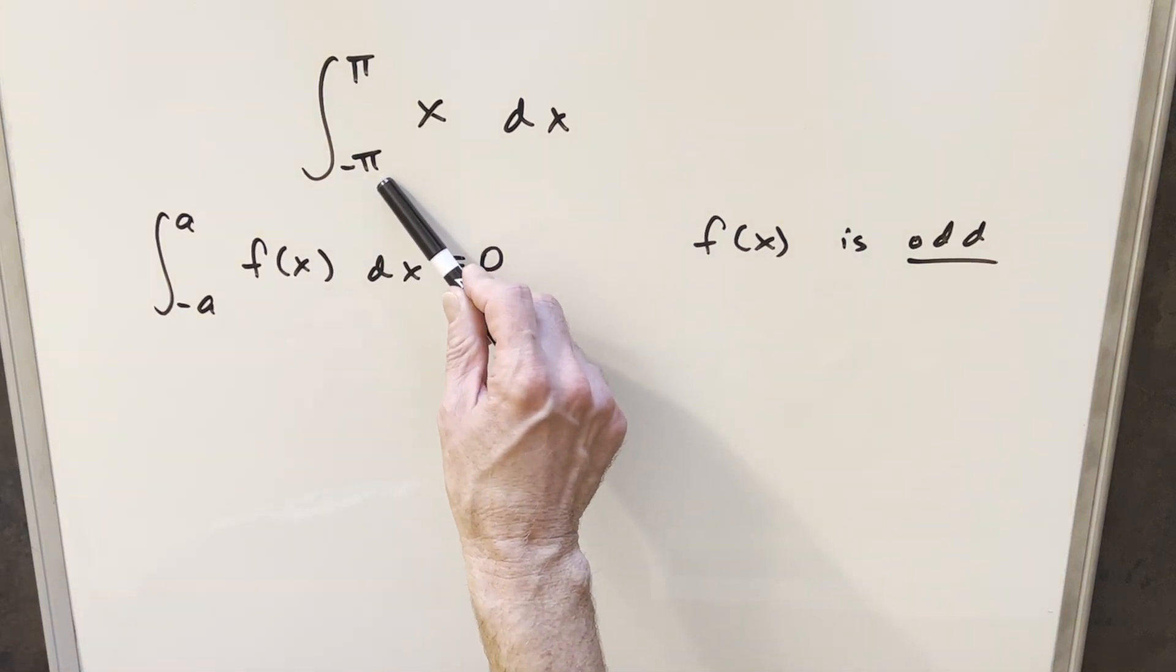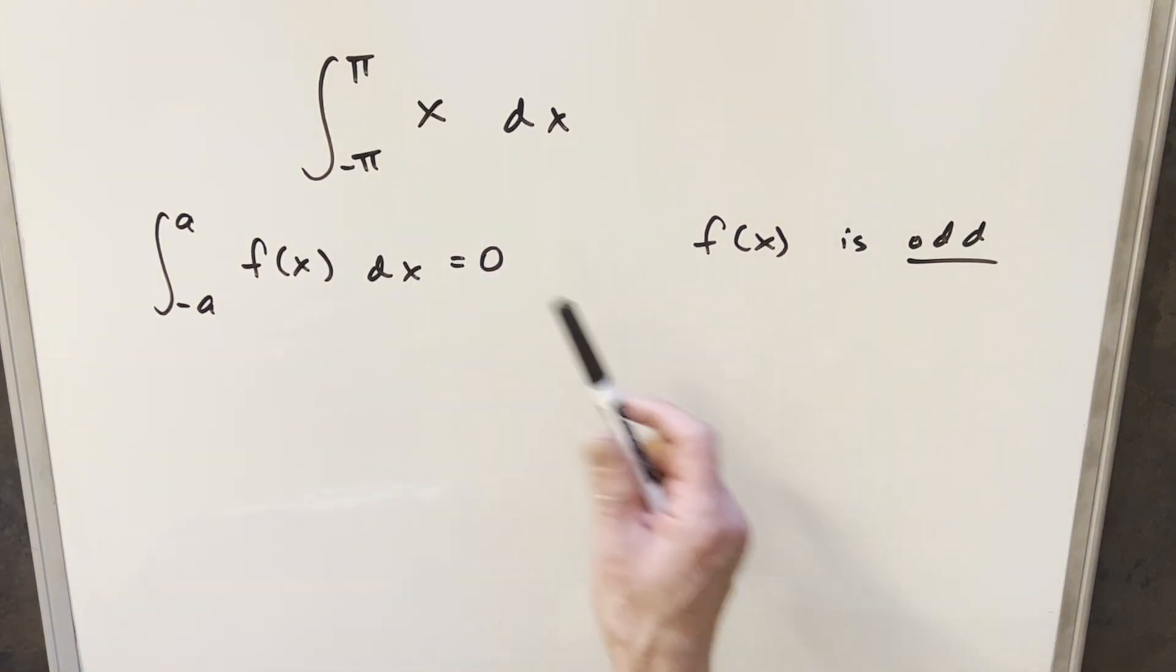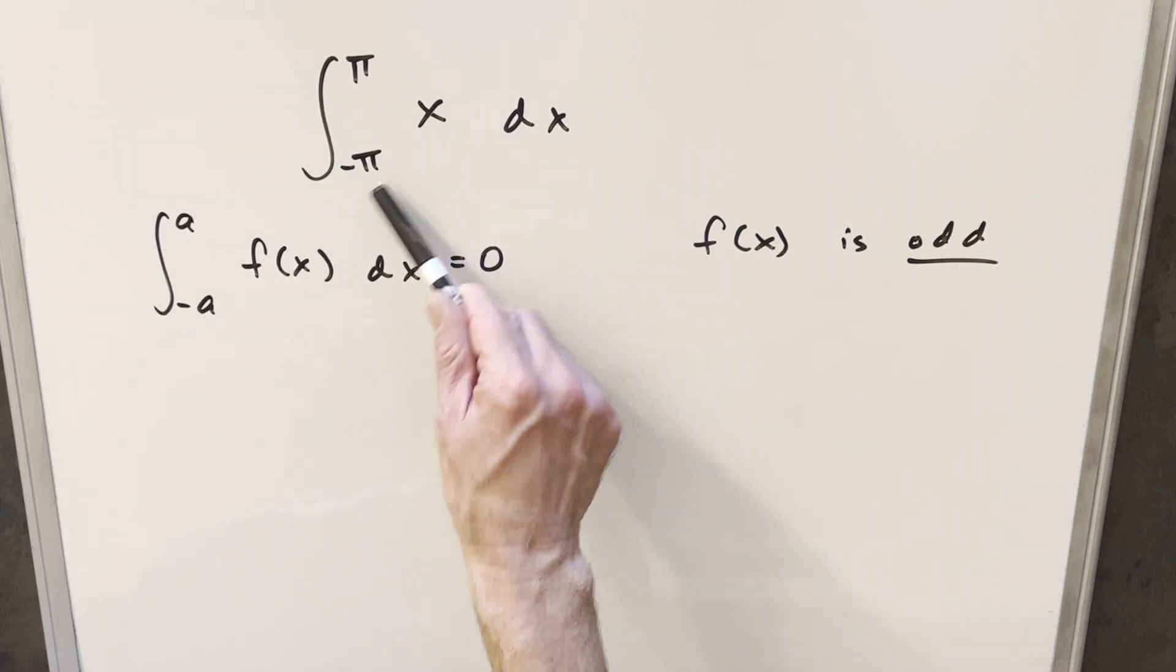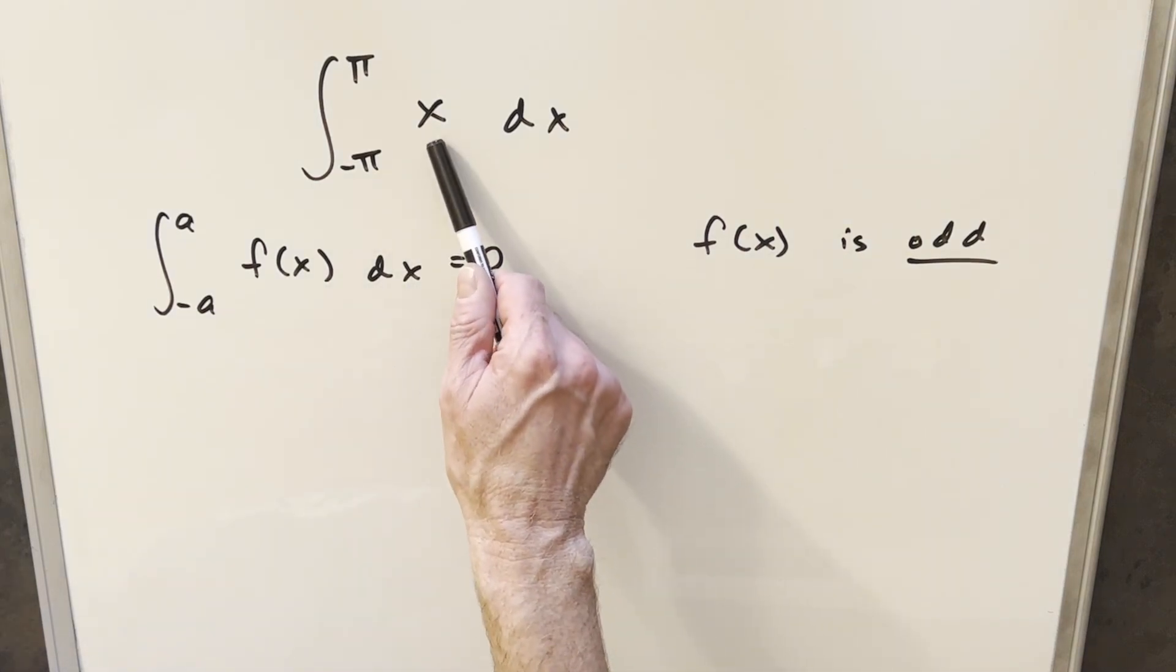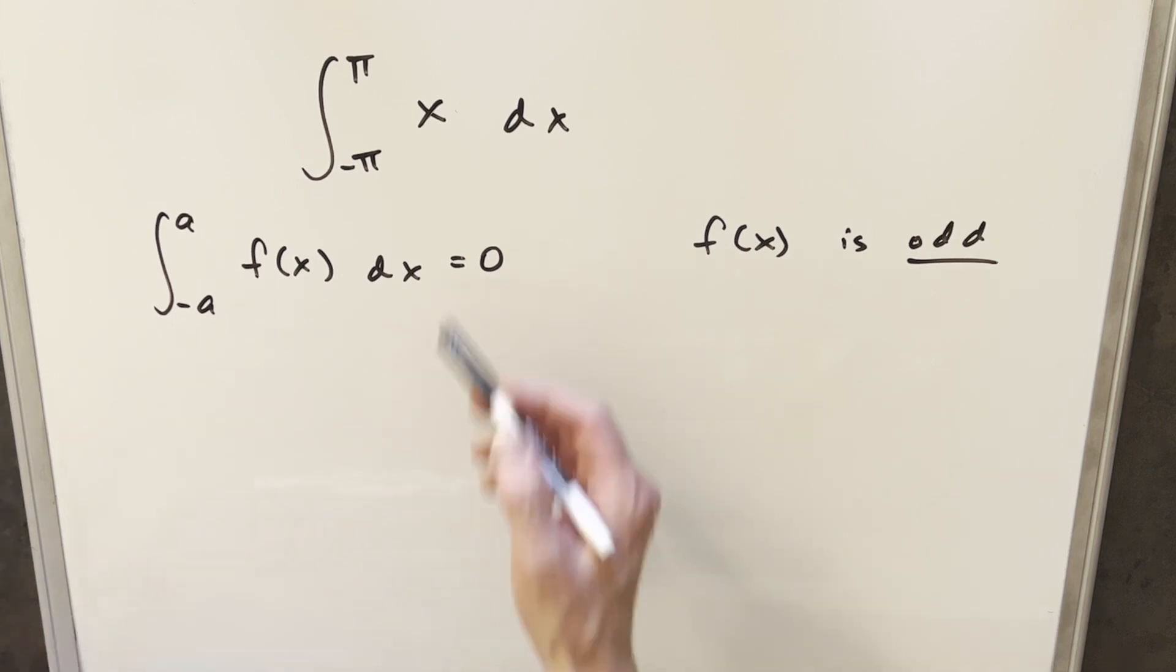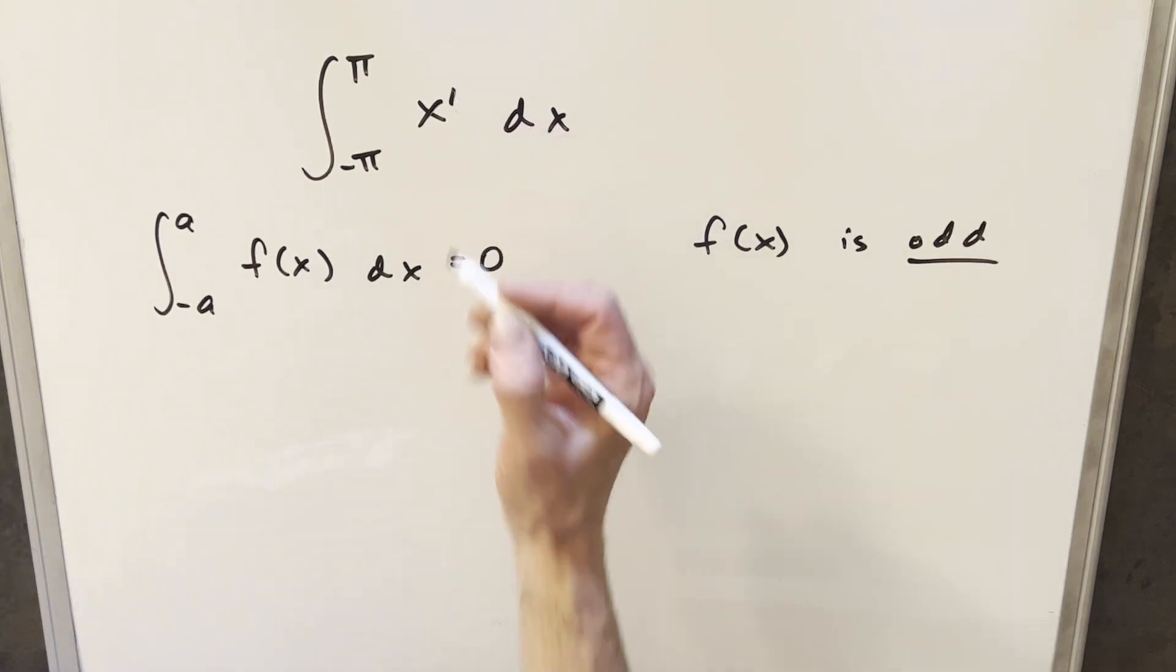Now we see here we have the symmetric bounds, and there are a few other conditions on this, like we need the bounds to be finite, and we need a continuous curve, but of course x is continuous. And you notice for x, we could look at this as an odd exponent of one, and then we can know it's an odd function.